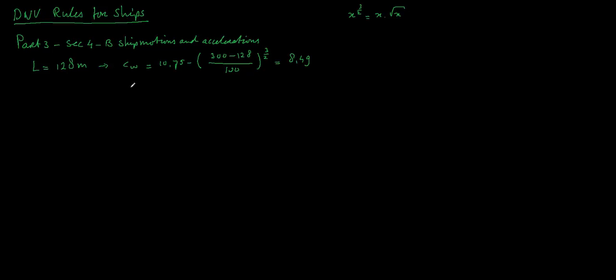Another number we need is the Cv, which is the square root of the length of the vessel divided by 50, which would be square root of 128 divided by 50, equals 0.23. Let's go back to the document.